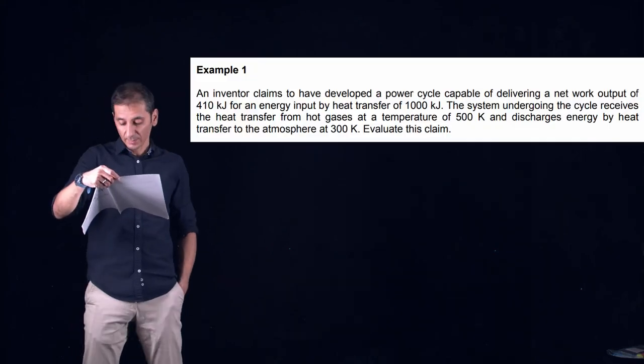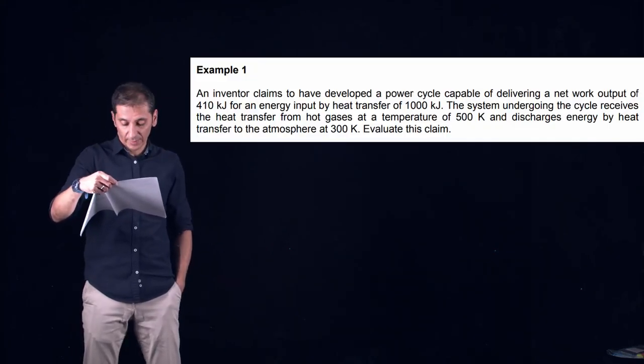Let us now solve an example regarding Carnot heat engines to better illustrate the importance of this concept. In this example we have an inventor claiming to have developed a power cycle capable of delivering a network output of 410 kilojoules.